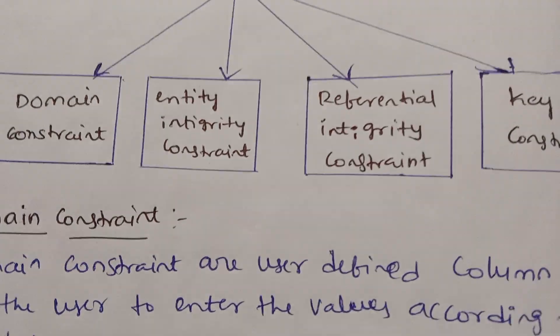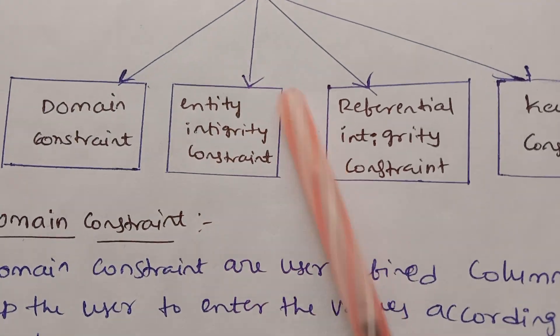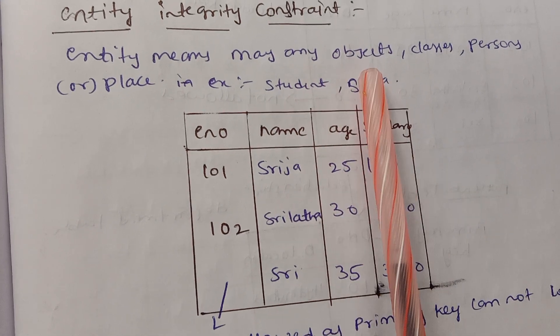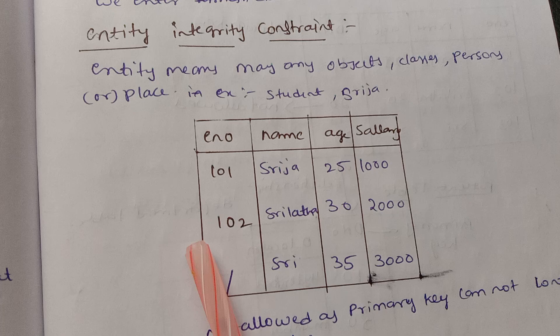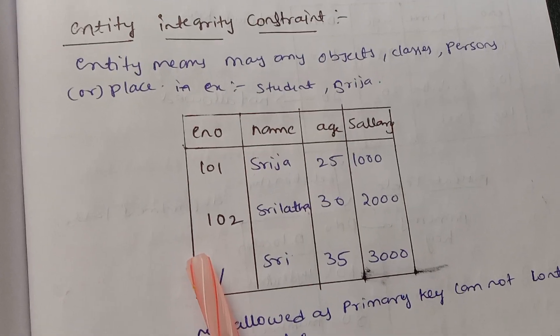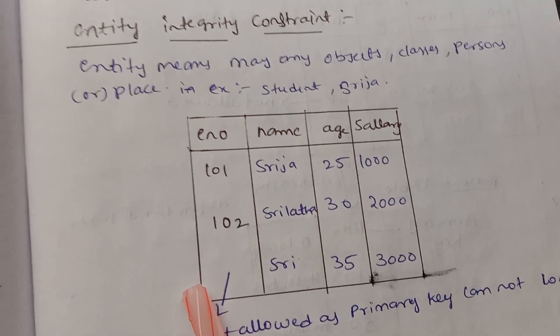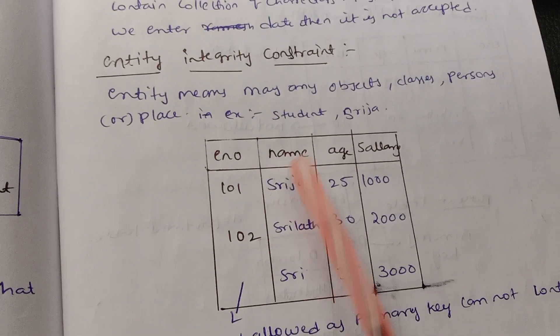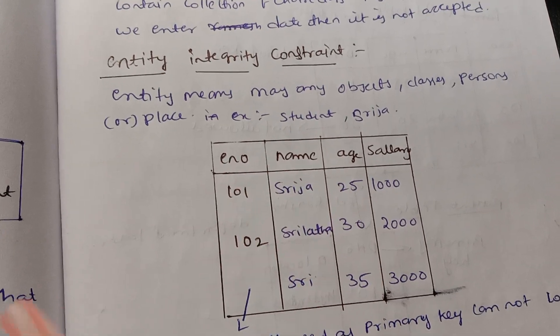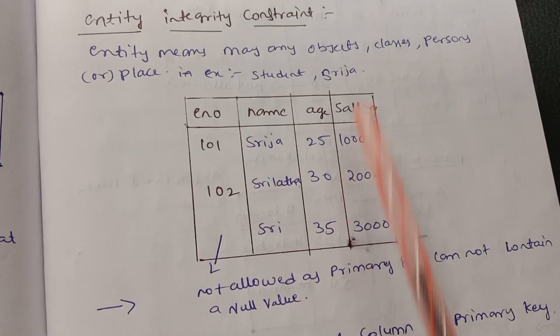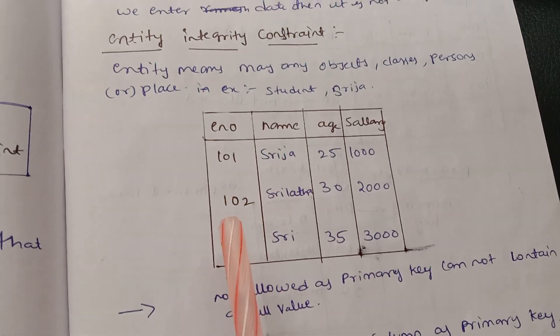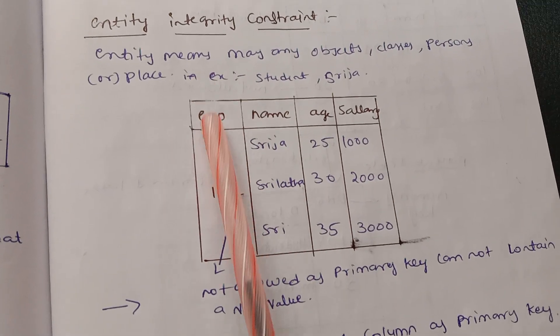Now let's look at the entity integrity constraint. An entity can be any object, class, person, place, or student. For example, Shreeja is an entity with attributes like name, age, salary, and employee number. Each row holds information about one entity, such as an individual employee.